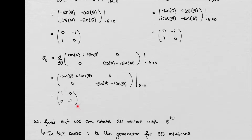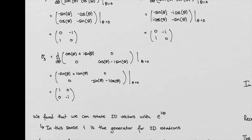This generator — sigma 3 — cannot be made up of any linear combination of the other two. They're just in the wrong entries; there's no way to build sigma 3 from sigma 1 and sigma 2. So these are all linearly independent matrices, and they are the generators of SU2.